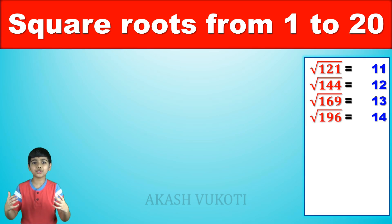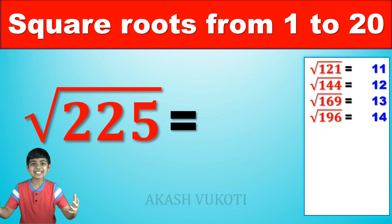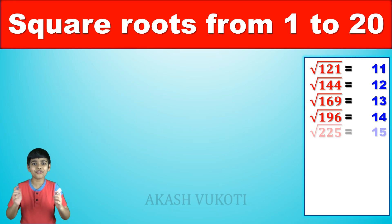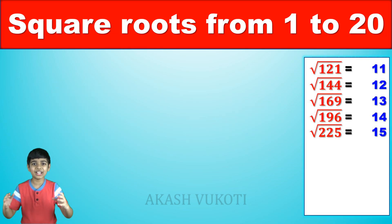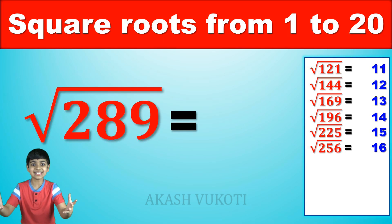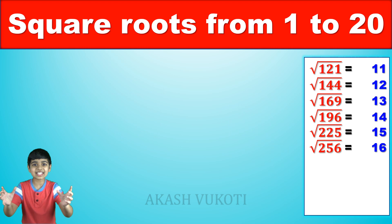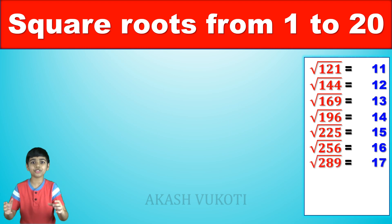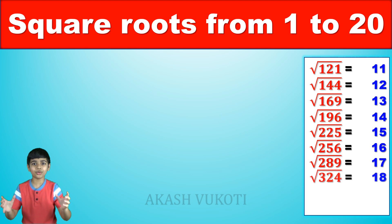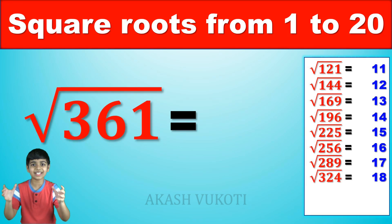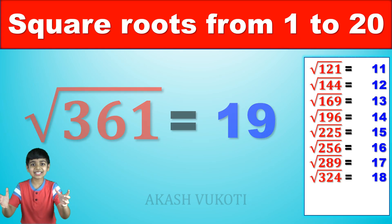The square root of 225 is 15. Let's go finish this up. The square root of 256 is 16. The square root of 289 is — come on, you got this — 17. The square root of 324 is 18. The square root of 361 is 19.